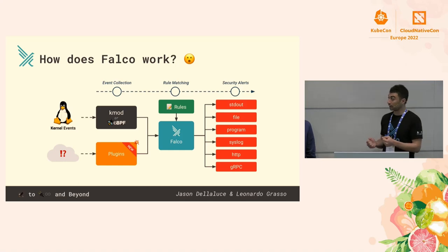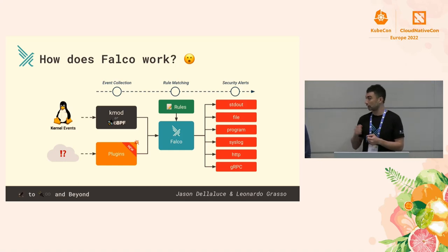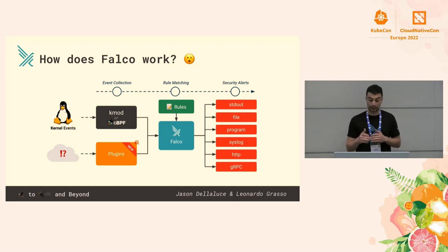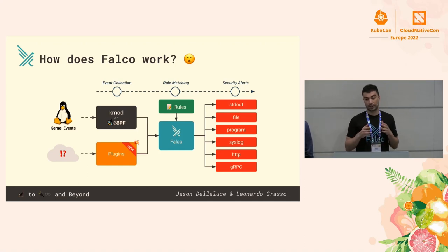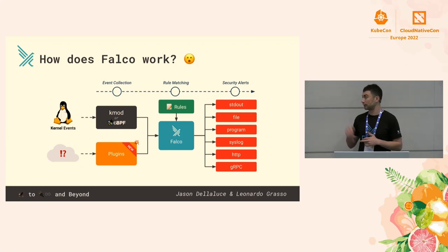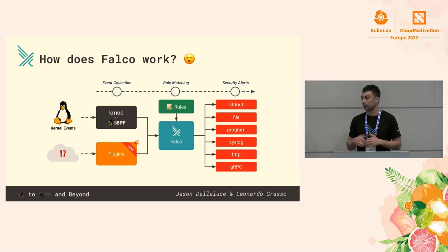Events are collected at the kernel level with either a kernel module or a BPF probe. In time, Falco started supporting many more event sources thanks to the new plugin system, but we'll get back to it later. When an event matches a given security rule, Falco sends you an alert in many different outputs — for example, a simple stdout, an HTTP webhook, or gRPC. So it's very easy to make Falco suit your specific use case.